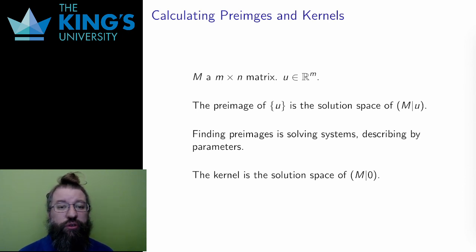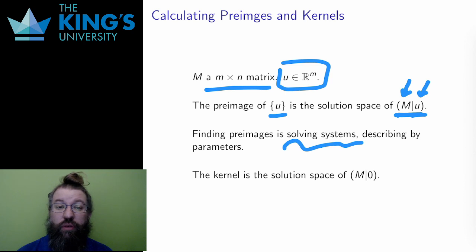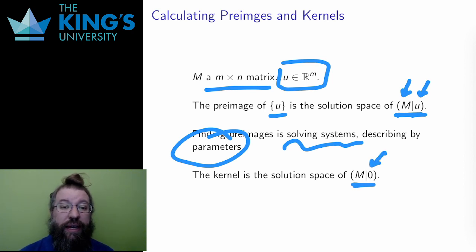How do I calculate pre-images and kernels? Well, like everything else in this course so far, there is a matrix algorithm to do this. If u is a vector in the target space, the pre-image of u is the solution space of the extended matrix I get when I add u as a column to the matrix M. This is just like solving systems, and again, row reduction solves this for me. I can get a description by parameters, which will be an offset span if I write it as a vector equation. For the kernel, the target is the zero vector, so the kernel is found by calculating the system where all the constants are zero.